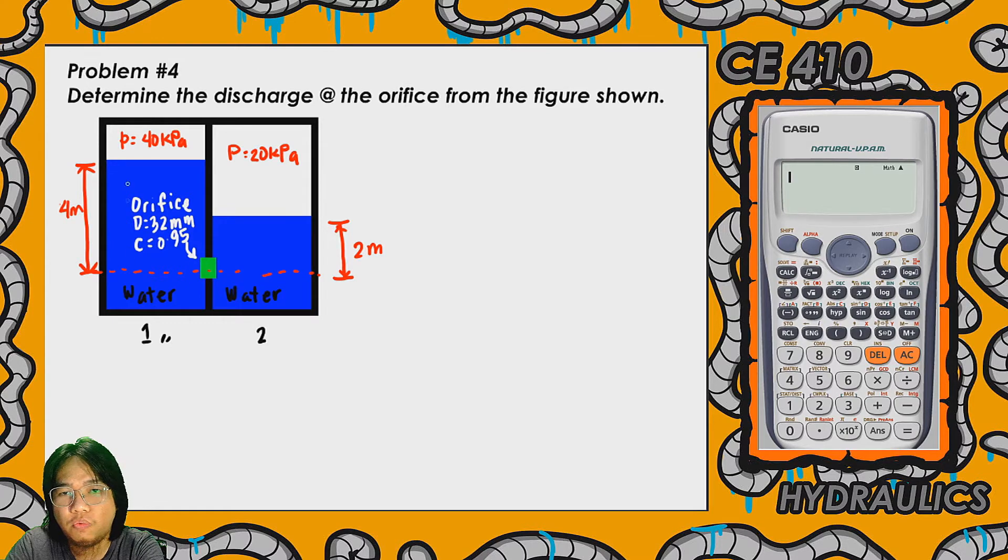the input gauge pressure is rated at 20 kilopascals. There is an existing head of water at the first chamber - from the orifice up to the liquid surface, the head is 4 meters. While at the second chamber, the head from the orifice up to the liquid surface is 2 meters.